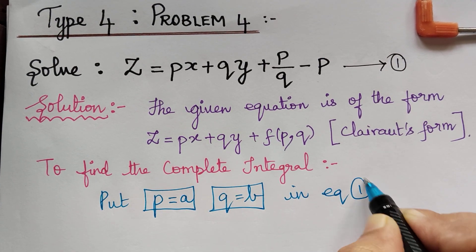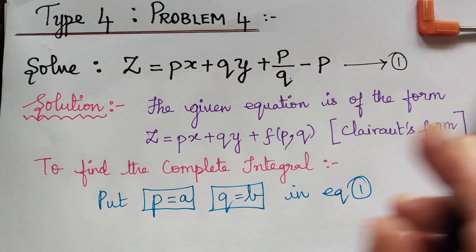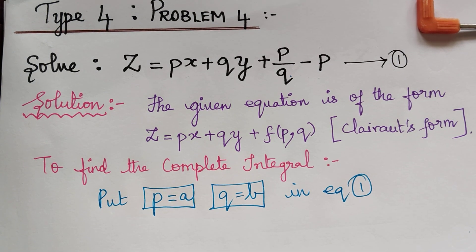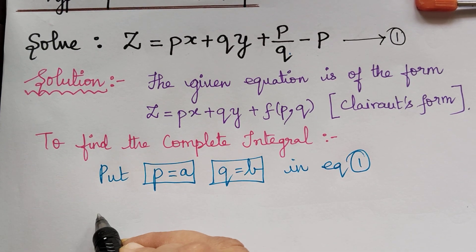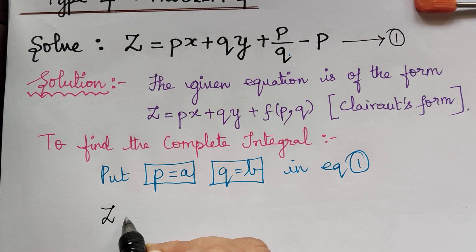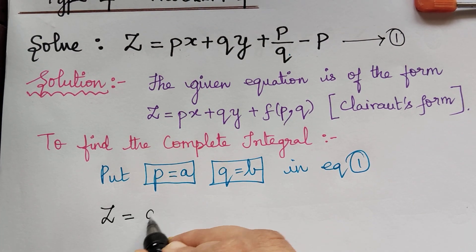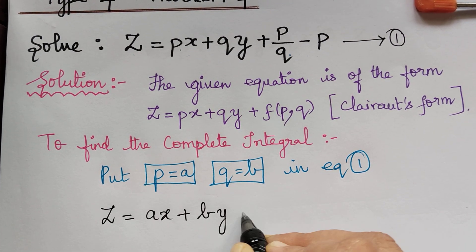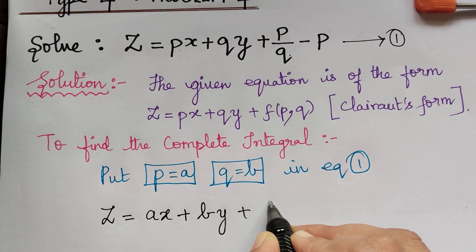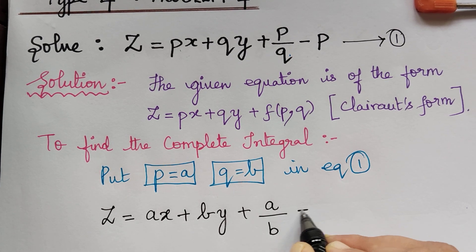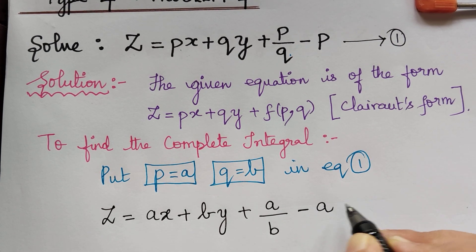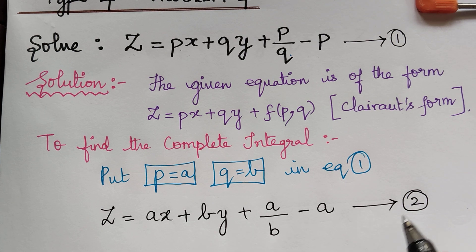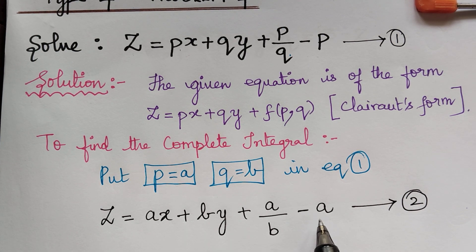That is, in the given equation, if we replace p as a and q as b, we get z equal to ax plus by plus a by b minus a. Let us mark this as equation 2, and this gives us the complete integral.